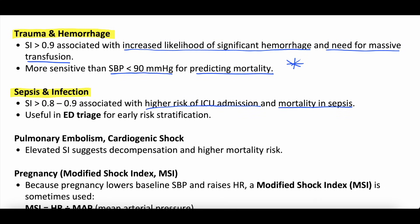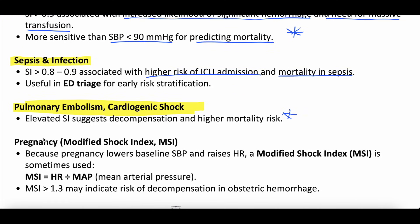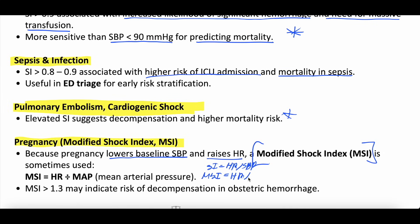Pulmonary embolism and cardiogenic shock: the shock index is also correlated with future decompensation and higher mortality risk. In pregnancy, there's something called the modified shock index. Pregnant patients have a lower baseline systolic blood pressure and a higher baseline heart rate, so you can't use the classical shock index. The modified shock index is heart rate divided by MAP, and a value greater than 1.3 may indicate risk of decompensation and obstetric hemorrhage — though the evidence is weaker than for the classic shock index.